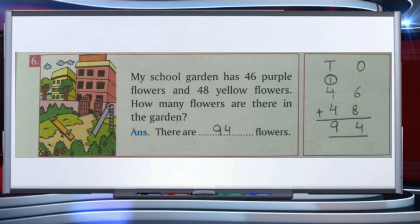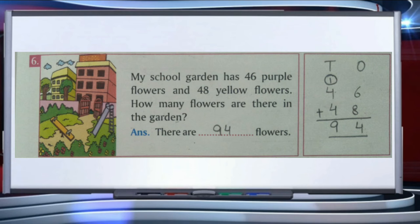We regroup 14 as 1 ten plus 4 ones. So we write 4 on the ones place and carry 1 to the tens place. Now we add the tens place: 4 plus 4 is 8, and 1 carry makes 9. So the answer is 94 — there are 94 flowers in the garden.